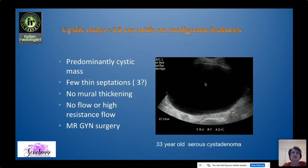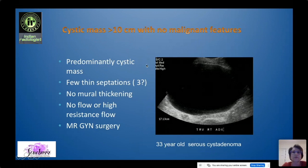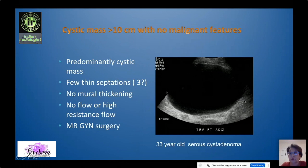When a cystic mass is more than 10 centimeters, both IOTA and ORADS indicate something additional needs to be done. But if a large cyst has these features — predominantly cystic, no septations or a few very thin septations, no mural thickening, no flow or high-resistance flow — it is very likely to be benign. Such a patient may undergo MR and then elective surgery. One such case turned out to be a very large benign serous cystadenoma. These features in a cystic lesion favor a benign cystic neoplasm.